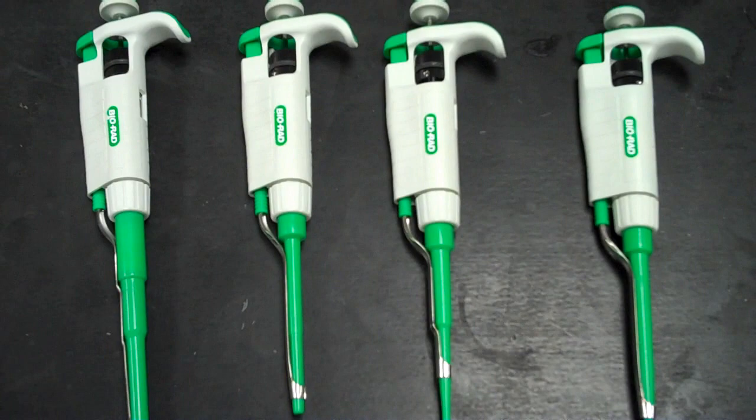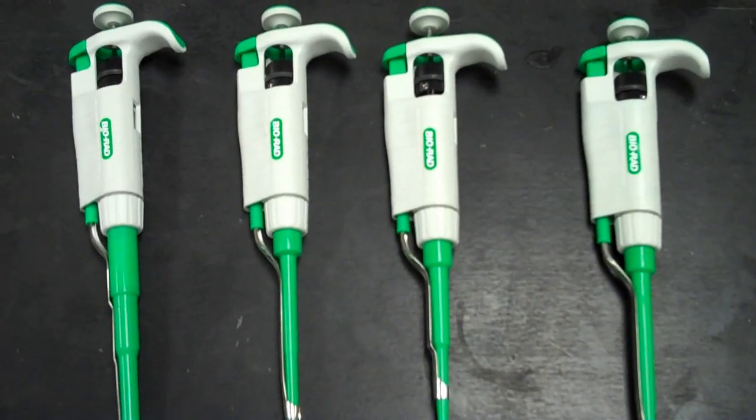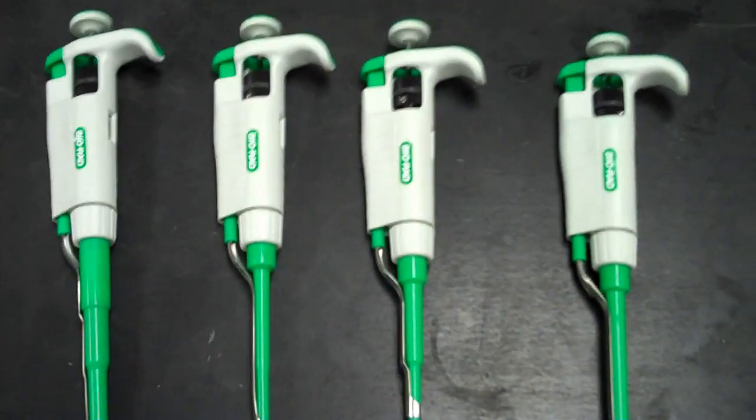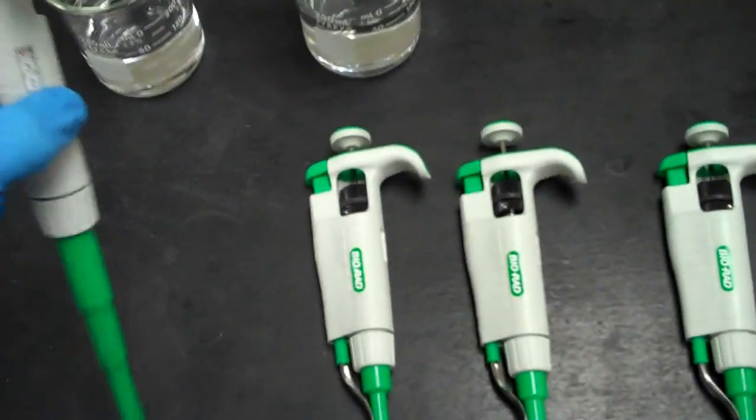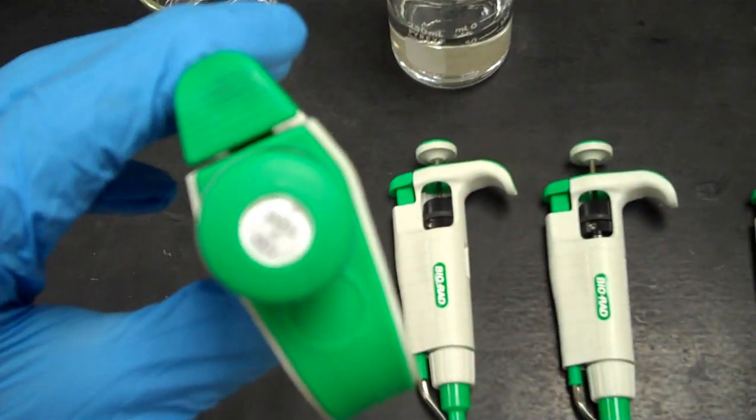The first thing to consider when pipetting is the amount of liquid you'll be pipetting up into the pipetter. Pipetters come in many different sizes. The range of each pipetter in microliters is listed on the top.